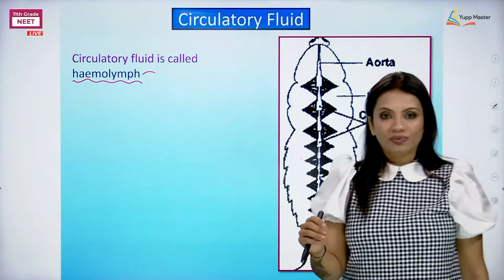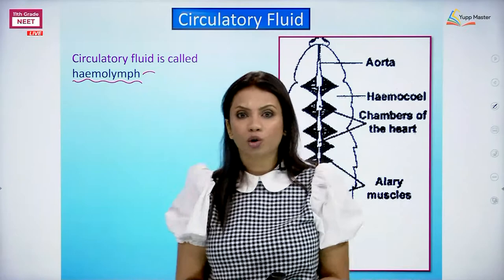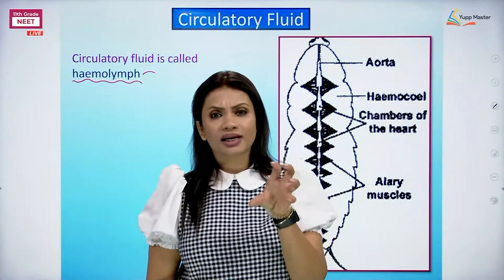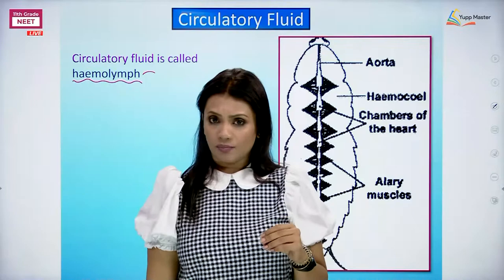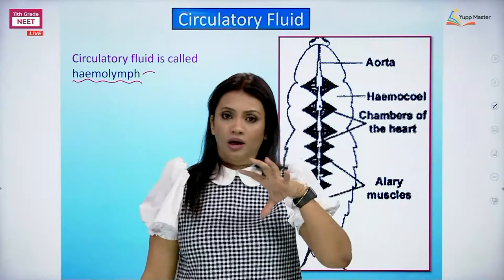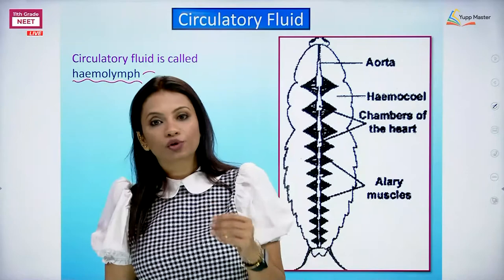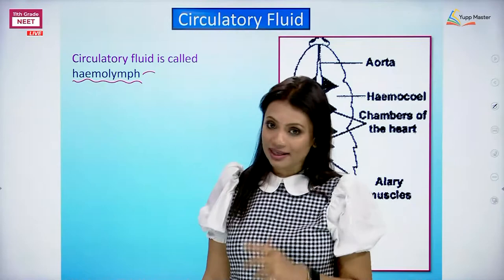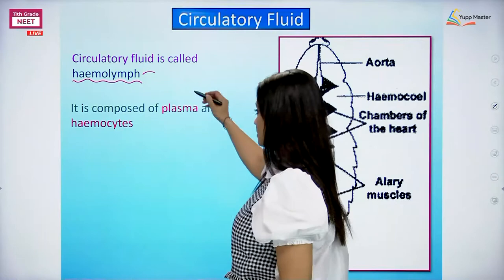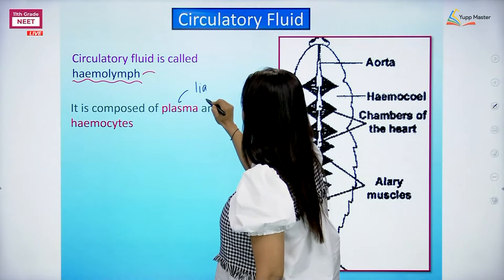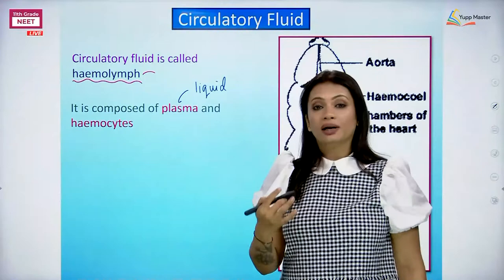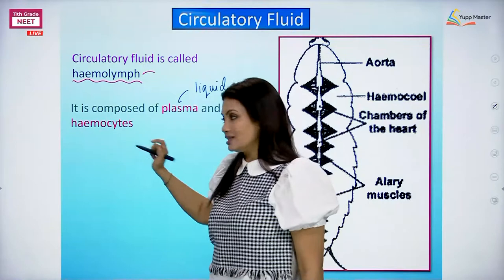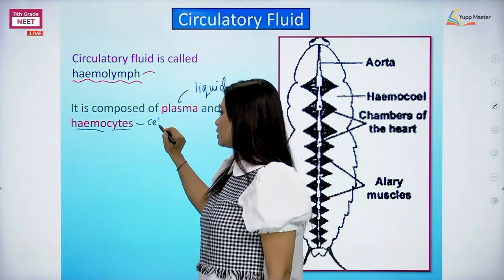Although cockroaches don't have hemoglobin, the basic fundamental of it being a circulating fluid is quite similar - even their circulating fluid has a liquid part and a solid part. Their circulating fluid also has functions just like ours. The circulating fluid is made up of a liquid part called plasma, and the solid part is the blood corpuscles - the blood cells. Since they are blood cells, they can be called hemocytes. Hemo generally stands for blood and cyte means cell.